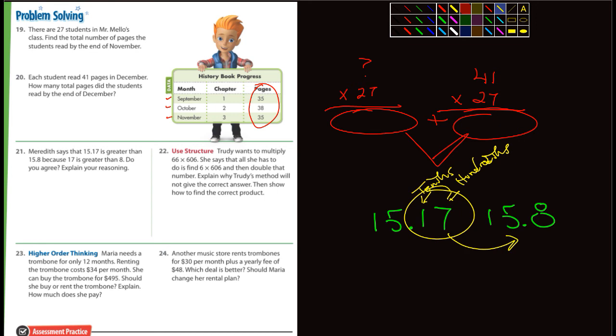Remember how we would, I think one of the ways we did it is we'd write the numbers, like 15.17 and then 15.8, and I can put a zero there. And then we would just start comparing them. Well, the ones are the same, that doesn't matter. Fives are the same, doesn't matter. Oh, here's the difference. Which is larger? The eight. So that's the one that's going to be the larger number.